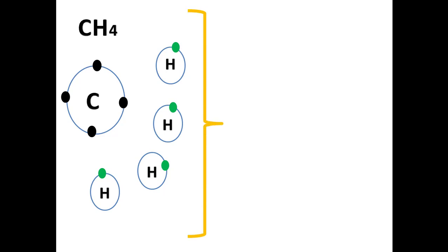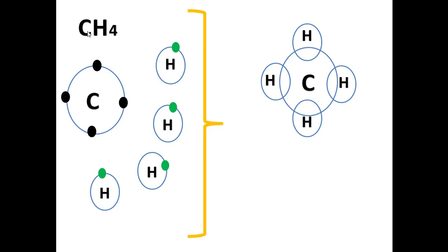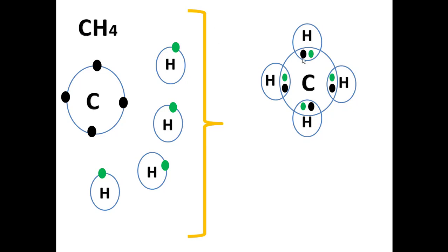So a new idea is sharing — sharing of electrons. Each hydrogen atom will share its electron with carbon, and carbon will share its electrons with the hydrogen atoms. Let's count the number of electrons around carbon: one, two, three, four, five, six, seven, eight — we have eight electrons around carbon, which gives it a stable outer shell.